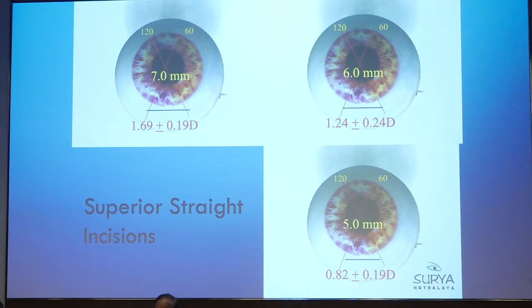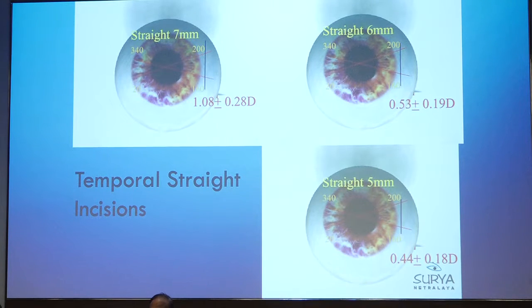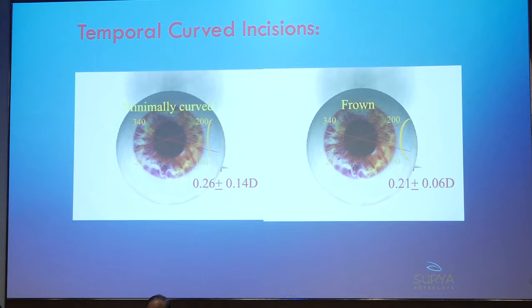Based on five to six years of surgeries, Dr. Boramani found that a straight 7mm incision induces 1.69 diopters of astigmatism, decreasing as incision size reduces. A frowned incision (frown 1) induces just 0.5 diopters, and a perfect U-shaped incision induces no astigmatism. Temporal incisions are away from the optical axis and less effective: a 7mm temporal incision induces 1 diopter and a 5mm induces 0.4 diopters. Curved temporal incisions have no effect on astigmatism.